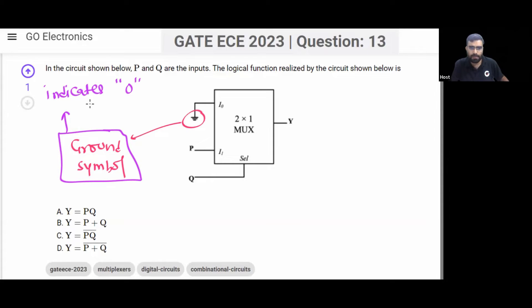So this ground symbol indicates logic 0. You can simply say that your I0 is 0. Your input I0, that is 0. Now you can easily see what will be your function that is implemented.